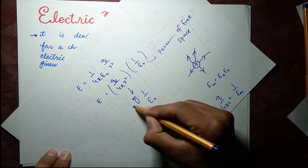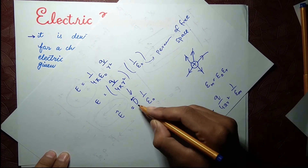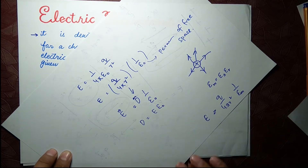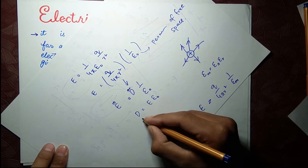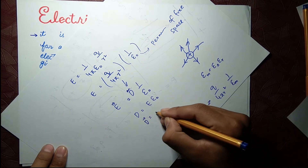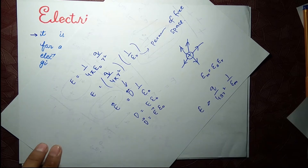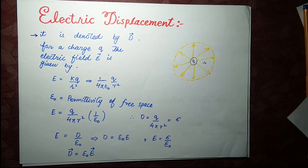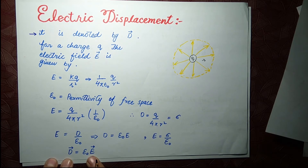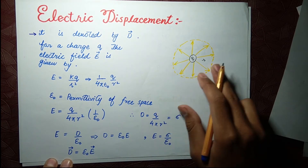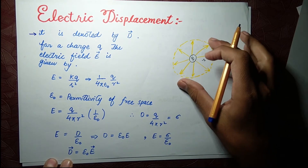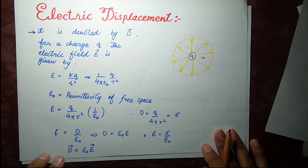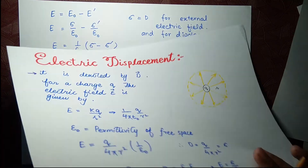So D equals epsilon naught times E, and in vector form D equals epsilon naught E. Now you understand what D is: D is epsilon naught E, arising from that positive charge at radius r. Now let's look at what the value of D is in the case of a dielectric.